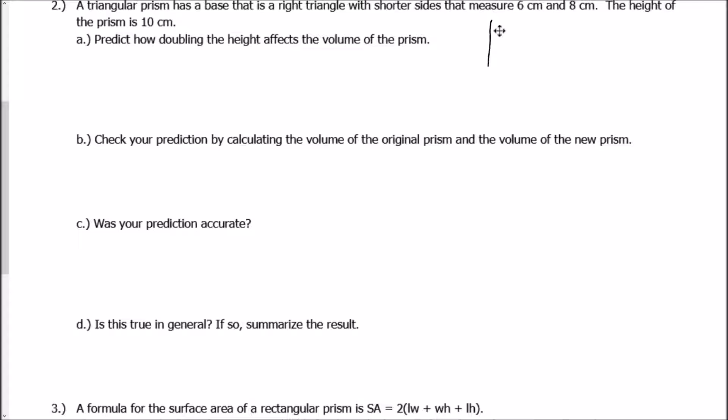So the first thing I'm going to want to do is draw a picture of what's happening. So it says the base right here is a right triangle. And remember, there's always two bases whenever we have a prism because they're always parallel to each other. So this right here is what's going to end up being my prism.